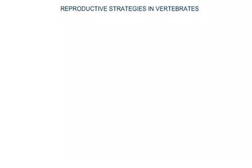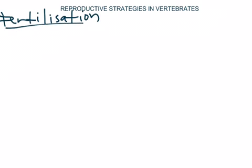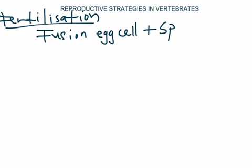Welcome to our lesson on reproductive strategies in vertebrates. I want us to begin our lesson today by defining what fertilization is. Fertilization is essentially the fusion of an egg cell and a sperm cell to give us a zygote.